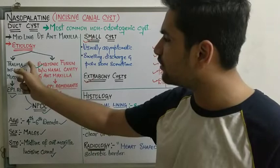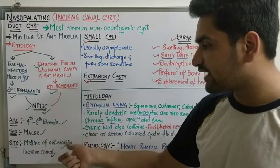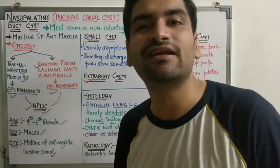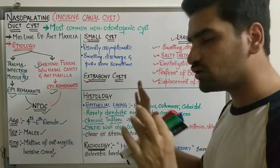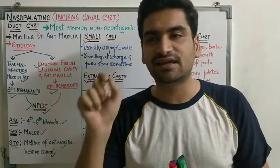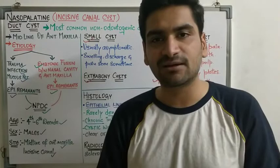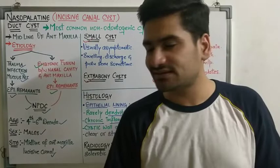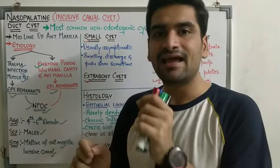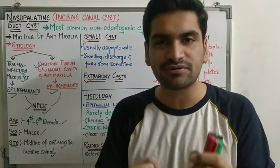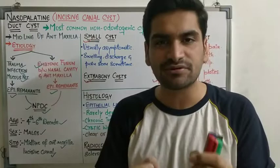To highlight the key points: epithelial remnants during embryonic fusion or trauma, infection, and mucous retention can lead to nasopalatine duct cyst. Males in the fourth to sixth decade are most affected, and the site is the midline of the anterior maxilla. The key radiological feature is a heart-shaped radiolucency in the anterior maxilla — this is frequently asked in pre-PG exams as the diagnosis for heart-shaped radiolucency in the anterior maxilla.